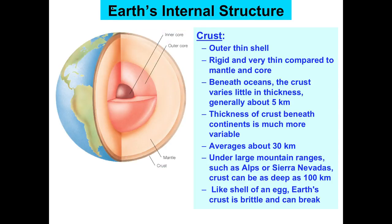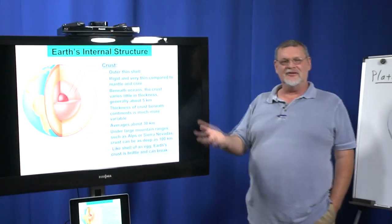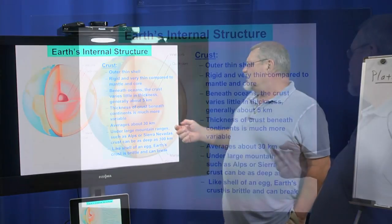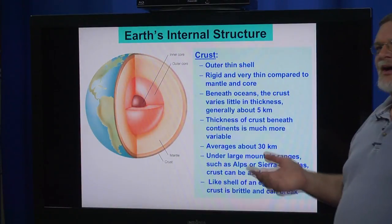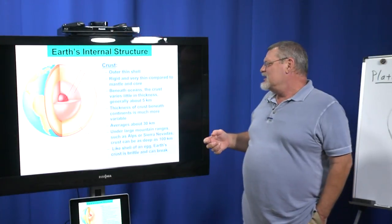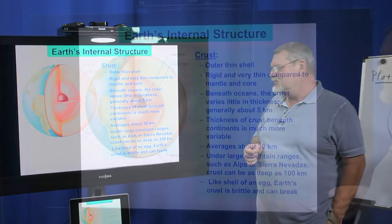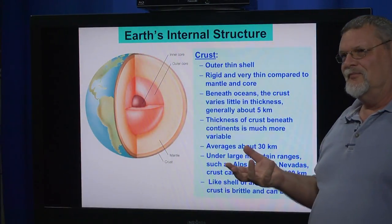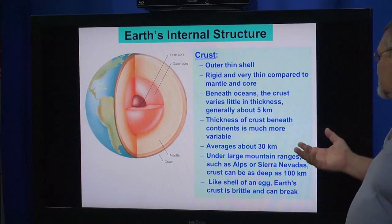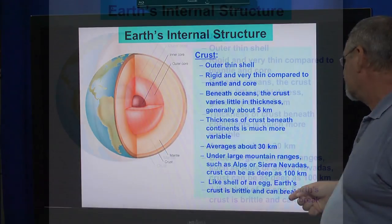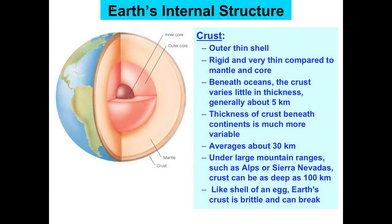Let's look at the internal structure, starting at the outside. The crust is a thin outer shell — it's rigid and very thin compared to the mantle and the core, sort of like an eggshell or even less, relative to the size of the Earth. It's made up of mostly igneous rocks and granites. Beneath the oceans, the crust is thinner. The continents are a bit thicker and they're less dense than the ocean crust. It averages about 30 kilometers in thickness.